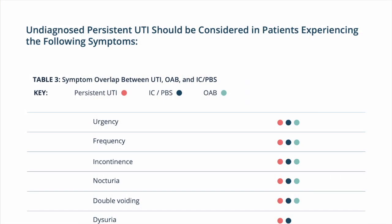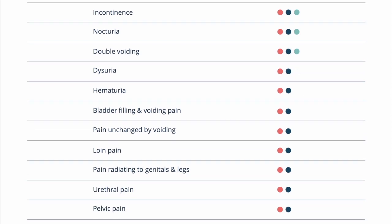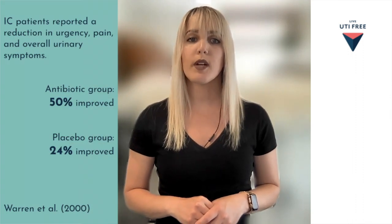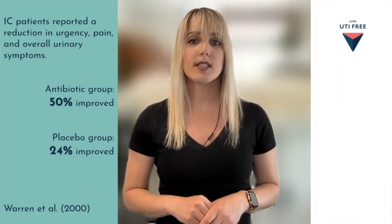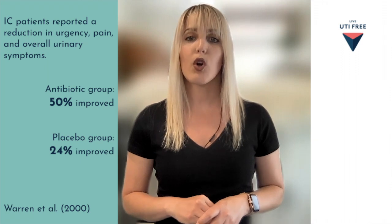We couldn't develop a resource about culture-negative UTIs without touching on the symptoms. You're likely familiar with the overlap of symptoms between various urinary conditions, such as interstitial cystitis or painful bladder syndrome, overactive bladder, and recurrent or chronic UTI. The clinician resource addresses these commonalities and presents to your doctor the possibility of a UTI having been misdiagnosed as another bladder condition because of the limitations around UTI testing. In one study with IC patients, almost 50% of participants who underwent antibiotic treatment for 18 weeks reported a reduction in urgency, pain, or overall symptoms — compared to 24% who reported improvement after receiving a placebo. This is not to say that all patients diagnosed with another bladder condition have an undiagnosed UTI, but rather that a culture-negative UTI should be considered as part of a complete diagnostic workup.